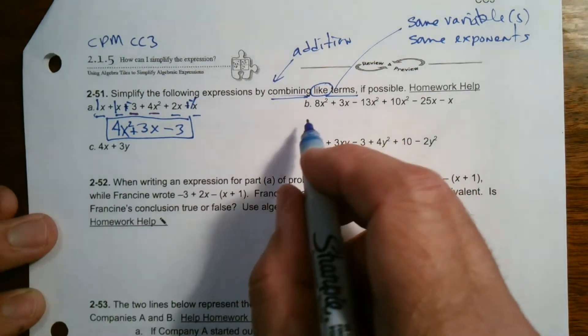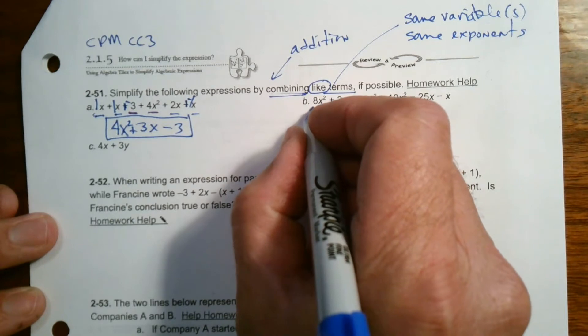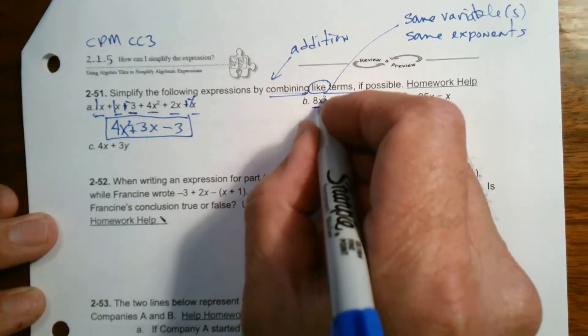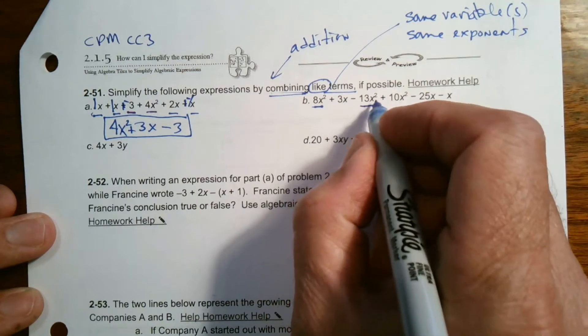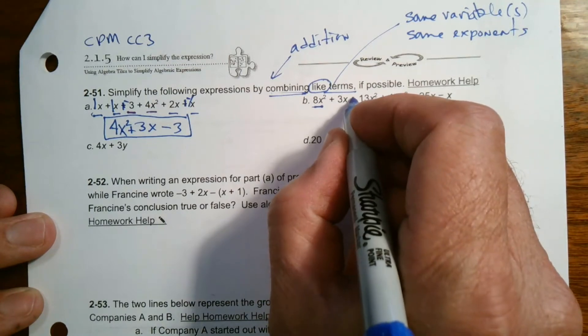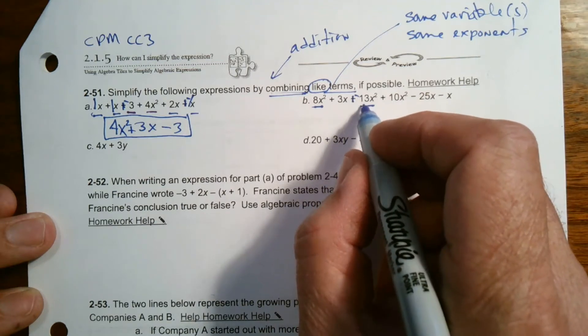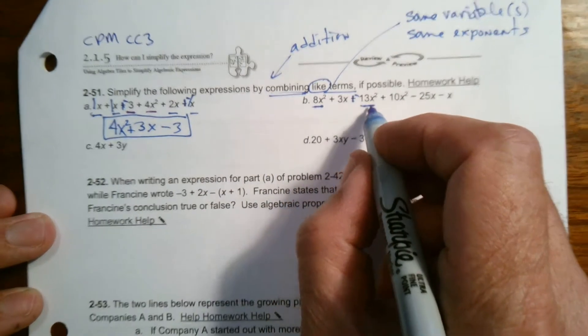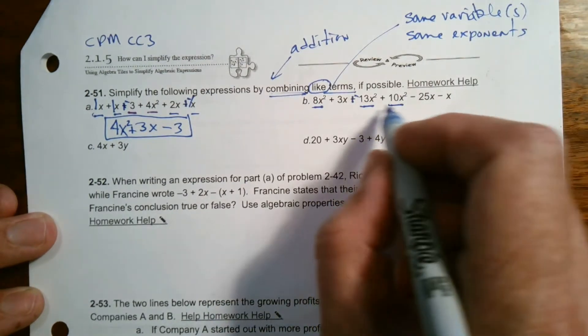So for B, we do the same thing. In this case, let's start with our X squared. So I have an eight X squared. So there's one term. I have this 13 X squared, and because it's a minus in front, it's actually a negative 13 X squared. You add the opposite. So eight X squared, negative 13 X squared. Here's a positive 10 X squared. And that's all my X squared.